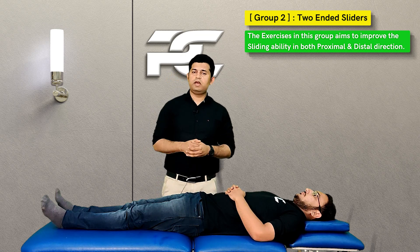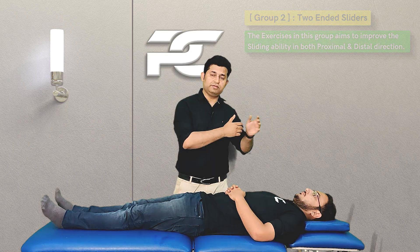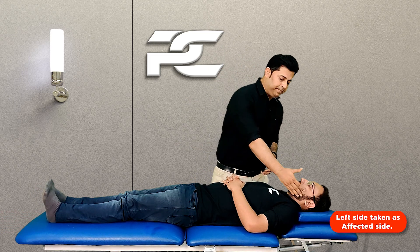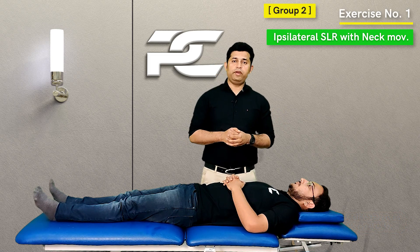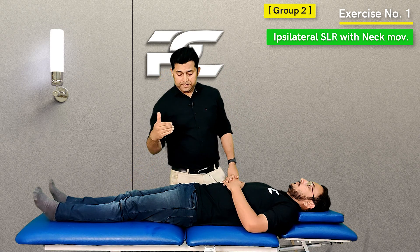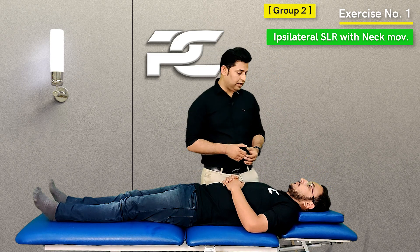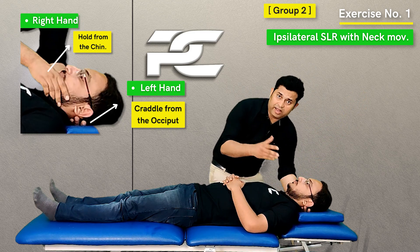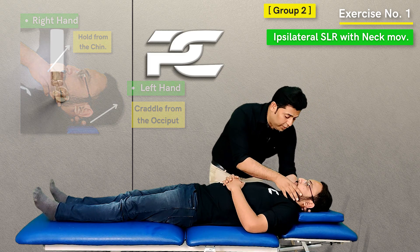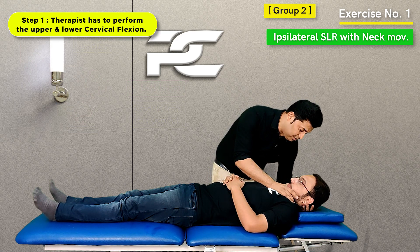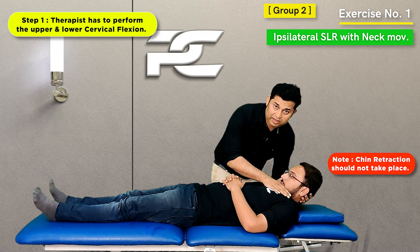Moving on to the next group of exercises, which are known as the two-ended sliders. Here, the intention of the therapist is to slide the nervous system in both directions — caudally as well as in the cephalad direction. Considering it is a left-side predominant cervicogenic headache, the first exercise in this group has the patient performing the ipsilateral-side SLR along with neck movements. The therapist's cephalad hand cradles the occiput while the caudad hand gently covers the anterior part of the chin, and both hands are used to produce upper and lower cervical flexion — with no chin retraction.